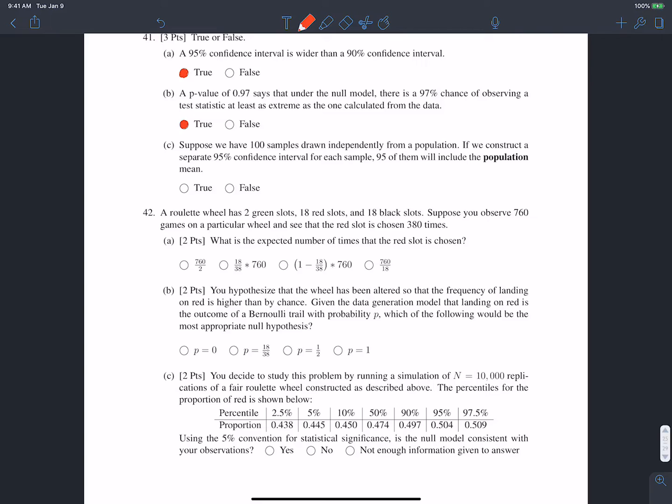OK, C, suppose we have 100 samples drawn independently from a population. If we construct a separate 95% confidence interval for each sample, 95 of them will include the population mean. This one's a little tricky. We would expect 95 of them to contain the population mean, but we don't know for sure. And the way that this is worded, it's almost implying that, for sure, 95% will contain the population mean. And there's no guarantee of that, so it's false. On average, it should be 95, but we don't know what it actually will be.